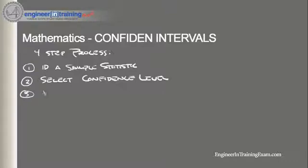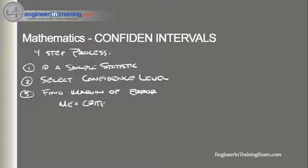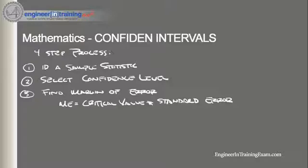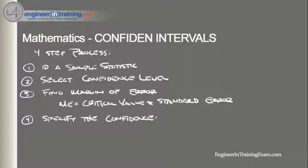Number three, we find the margin of error. The margin of error is calculated as the critical value times the standard error of the statistic. And then number four, we specify the confidence interval, which is defined as the sample statistic plus or minus the margin of error.